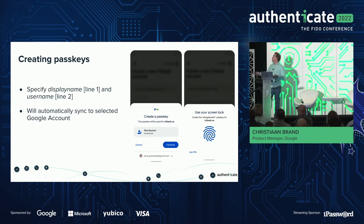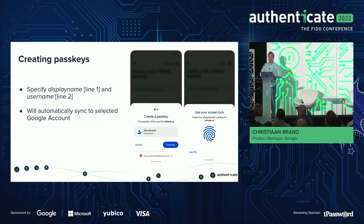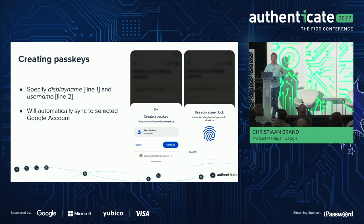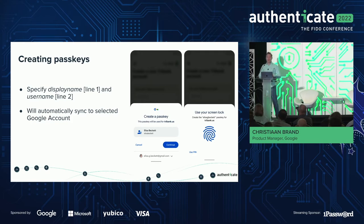You say continue and then need to do some form of user verification — whatever the system supports. We support any class three or strong biometric, which means typically fingerprint, face, and also any form of screen unlock the user has set up: pin, pattern, or password. Passkeys don't work if you don't have a screen lock set up on your phone, so we're hoping this is another way to get more users into setting up good hygiene for locking their devices.